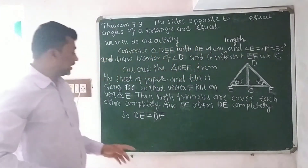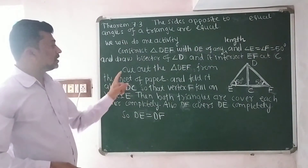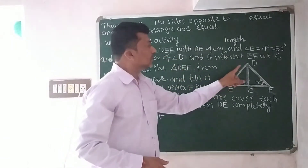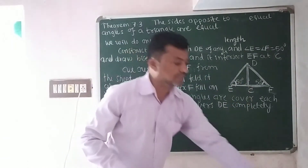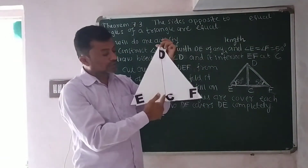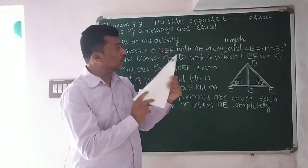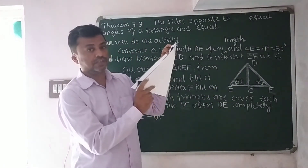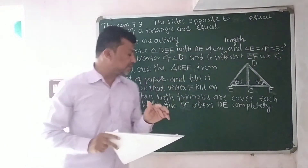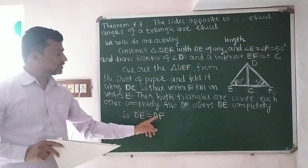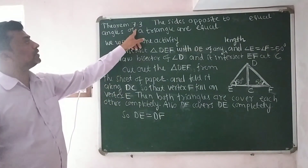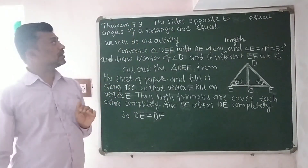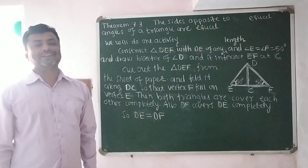So we can say that DE is equal to DF. Cutting out the triangle from the sheet of paper and folding along line segment DC, after folding, DF completely covers DE. Therefore DE is equal to DF, and we have proved theorem 7.3 — the side opposite to equal angles of a triangle are equal. This is a demonstration of theorem 7.3. I hope you can understand this. Thank you.